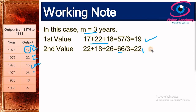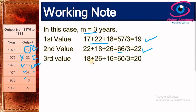For the third value, we discard 22 and consider 18, 26, and 16. These total 60, divided by 3, which gives a third value of 20. We repeat this same procedure for the remaining values until all values are exhausted.